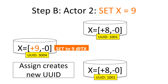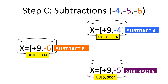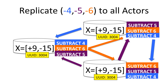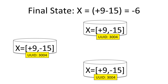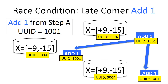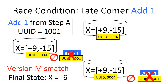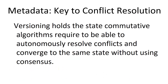The orange guy sets X equal to 9 and gets UUID 3004, which is replicated and applied. Then we do some concurrent subtractions, which are replicated and all applied because everyone has UUID 3004. Final state is +9 minus 15 equals minus 6. Now we simulate a latecomer — the add 1 that came in late. X right now has UUID 3004, but this add 1 has UUID 1001. We detect the version mismatch and ignore it, and the final state remains X equals minus 6. This versioning holds the state that the commutative algorithms use to autonomously resolve conflicts — the state is a substitution for consensus, with versioning at field level, document level, and delta level.